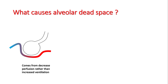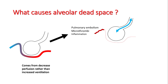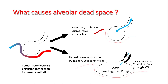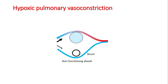Alveolar dead space is mostly caused by decreased perfusion rather than increased ventilation. In patients with pulmonary embolism, microthrombi, or inflammation causing reduced blood flow to the capillaries while ventilation persists, alveolar dead space results. In COPD, destruction of alveolar walls and decreased elasticity results in alveolar hypoxemia, which further causes hypoxic vasoconstriction, resulting in high VQ alveoli or even dead space.